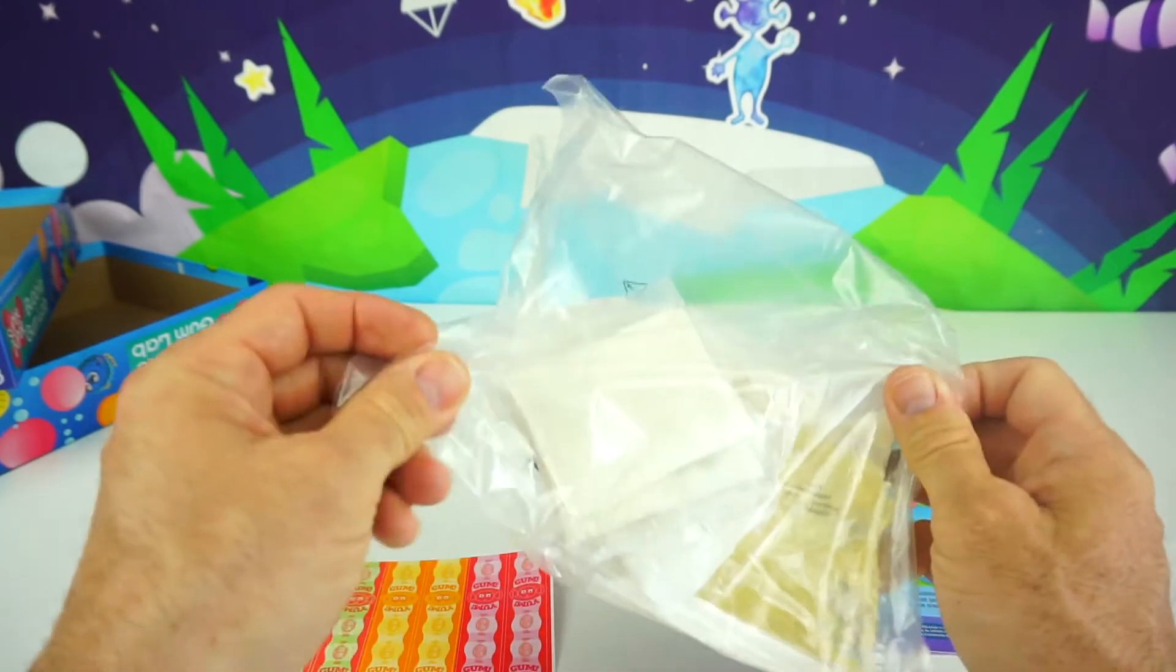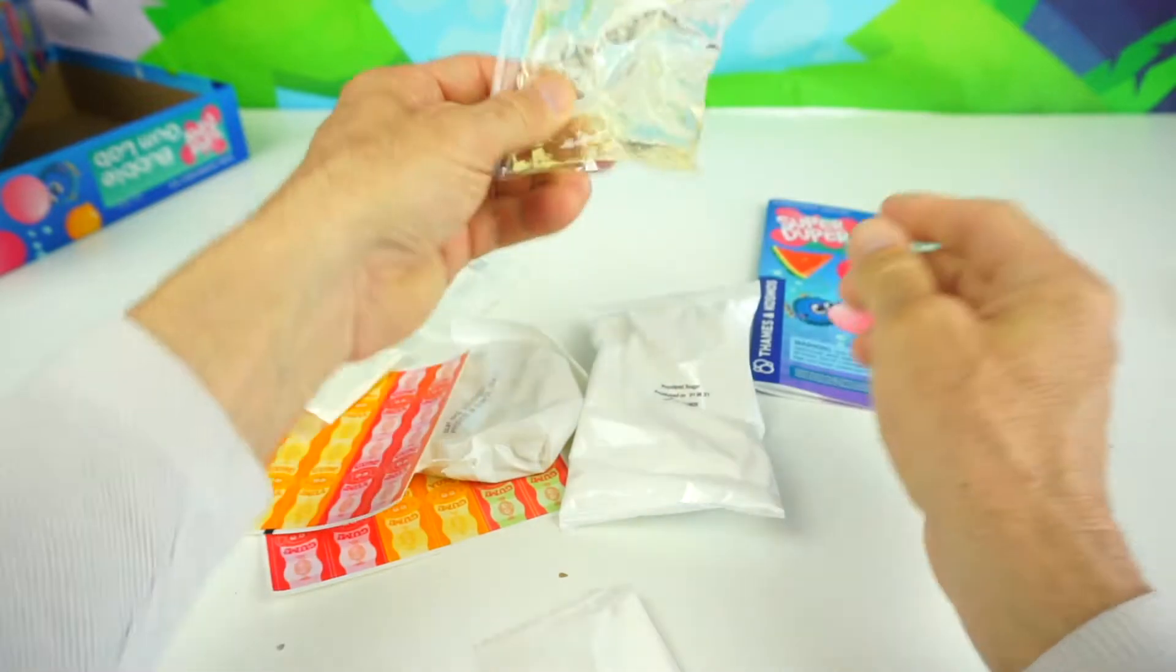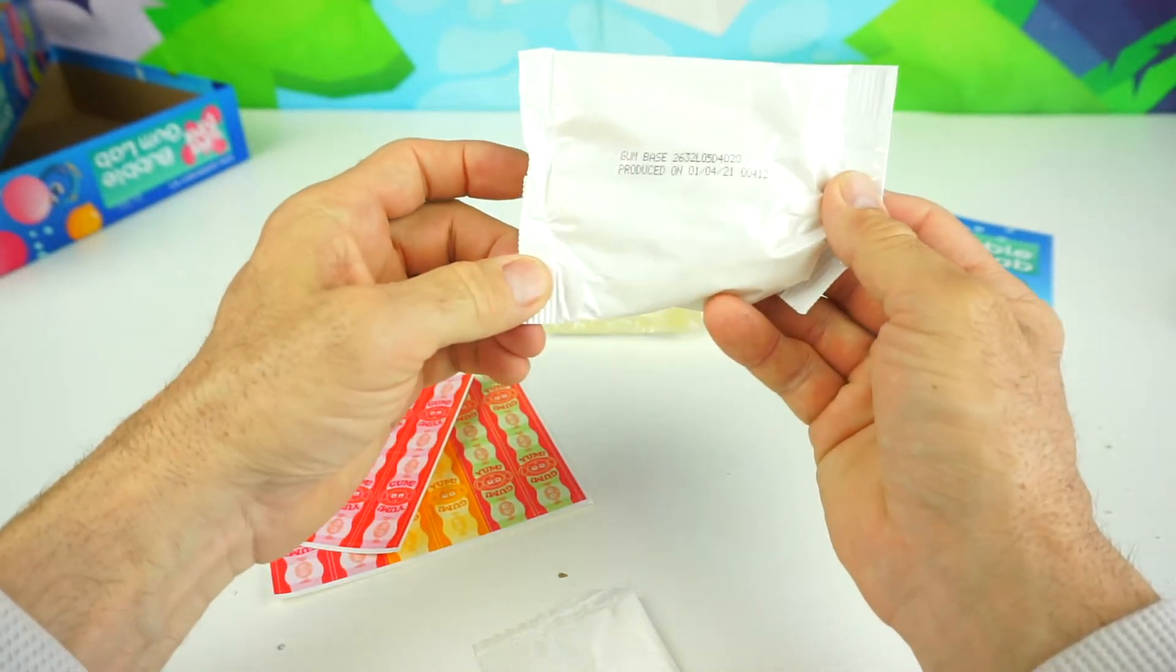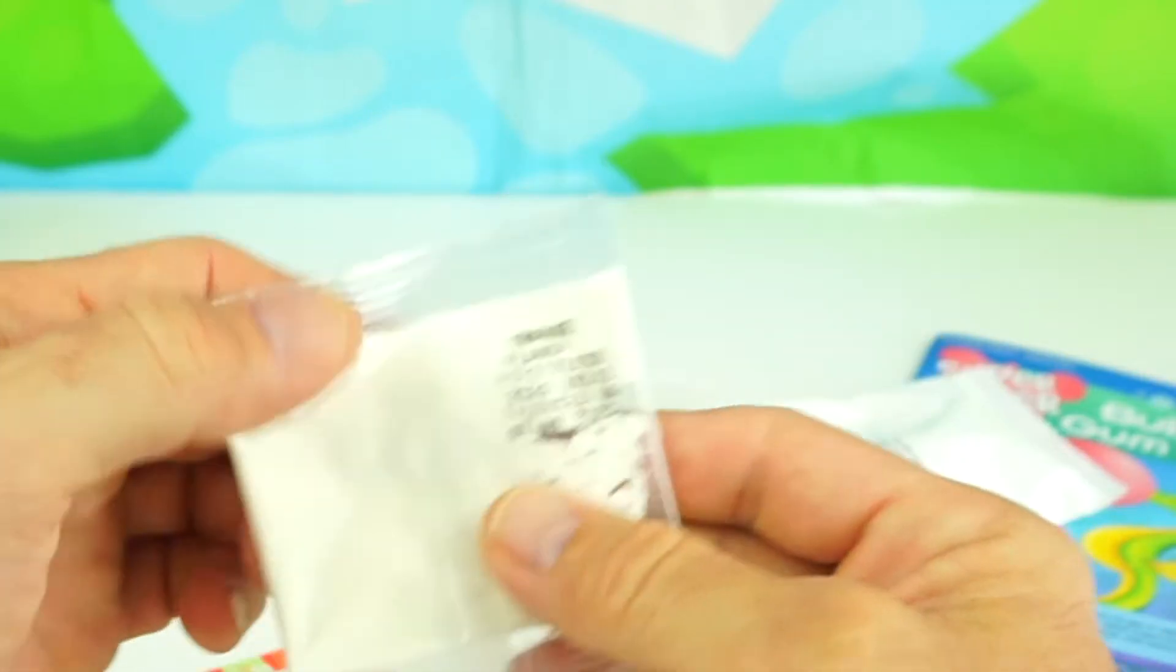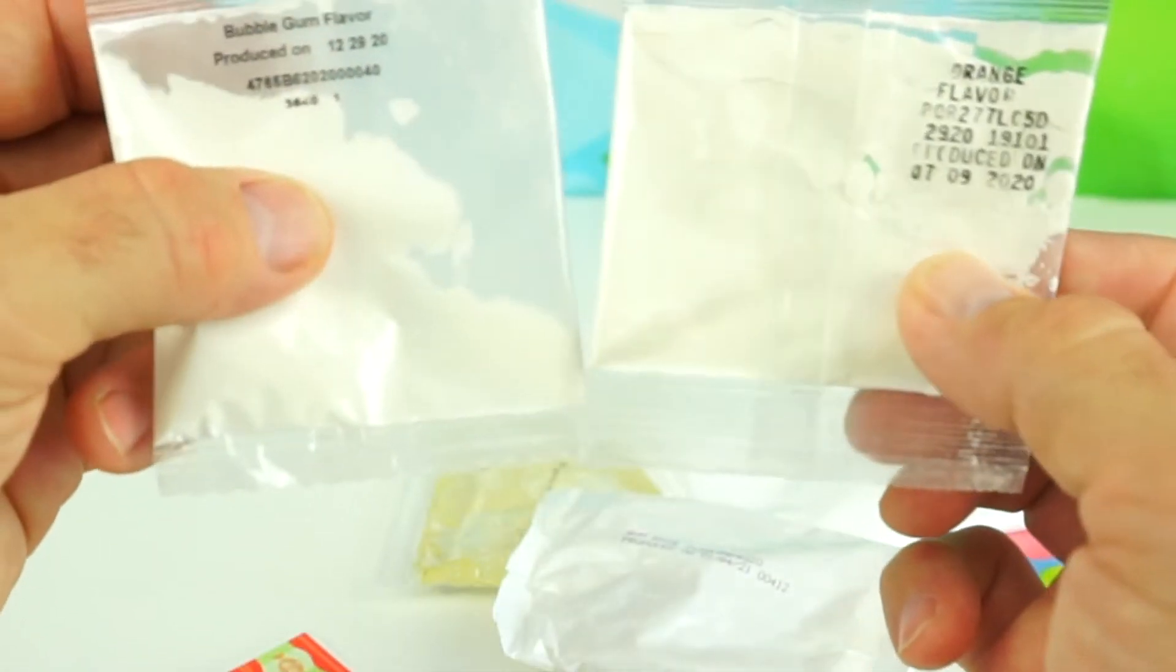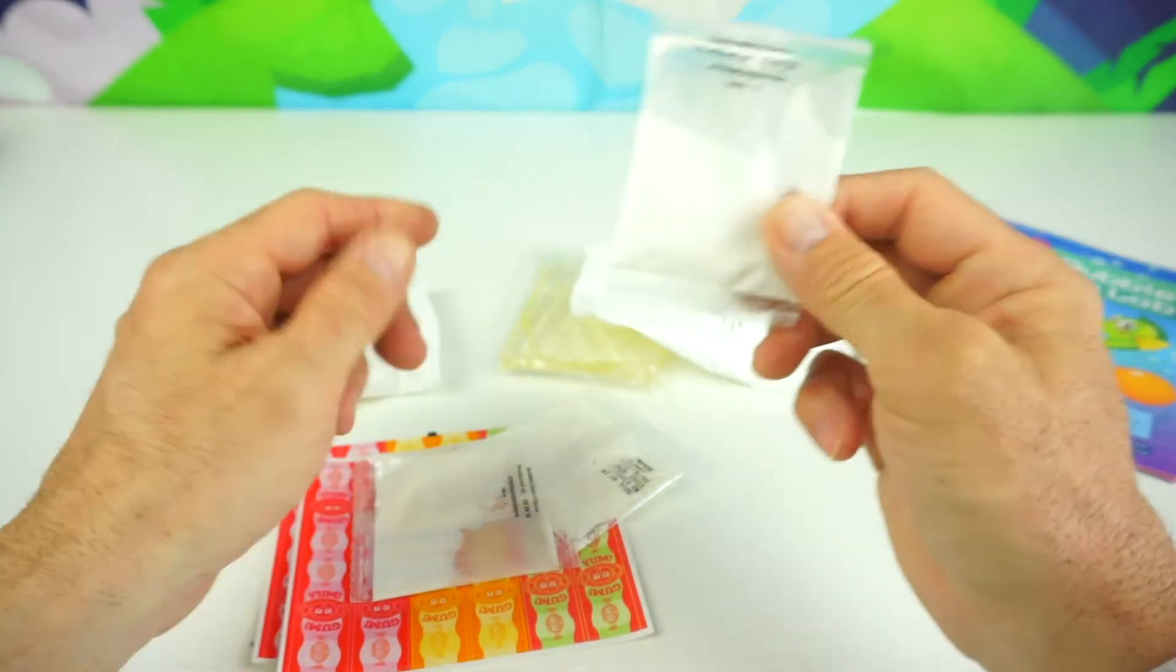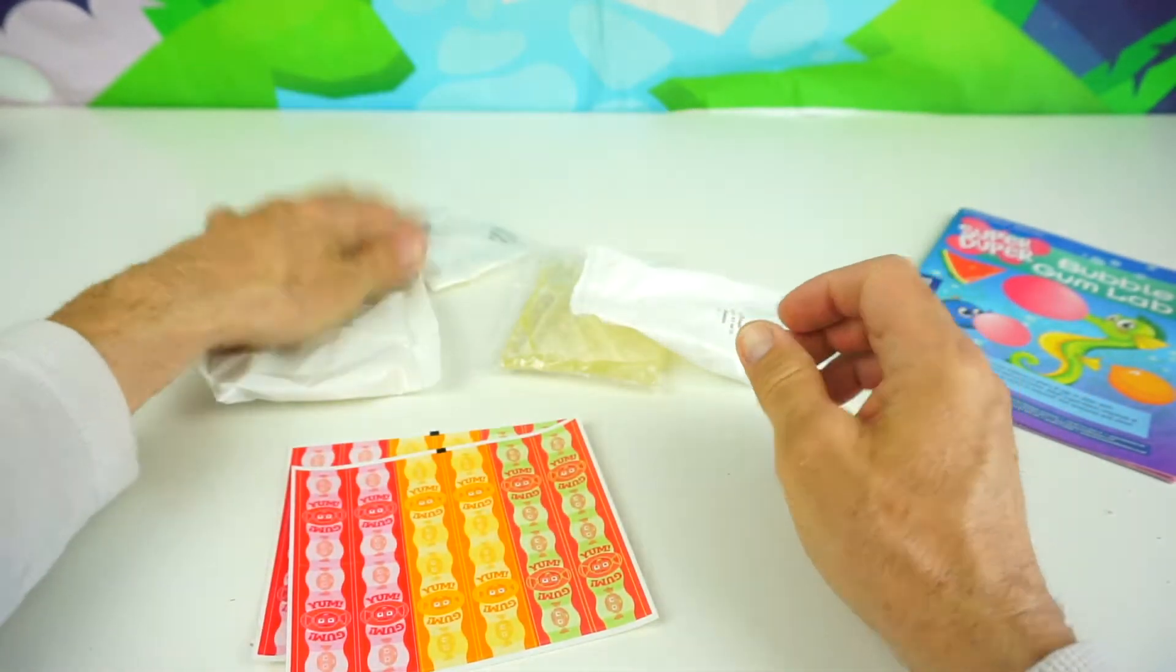Let's open up this bag. So here we have a bunch of different bags. This is our corn syrup. This is our powdered sugar. Here is our gum base. What is this here? This is orange flavor. And this one is bubblegum flavor. Wait a minute. Where's the watermelon flavor? Oh, here it is right down the bottom. Watermelon. So watermelon, bubblegum, and orange flavor.